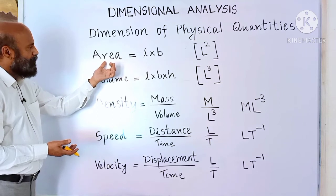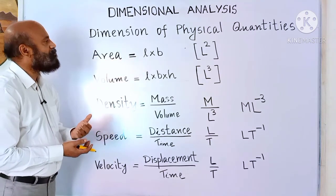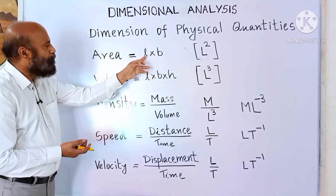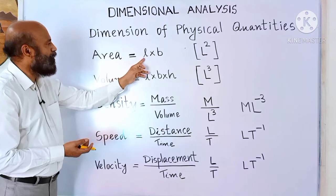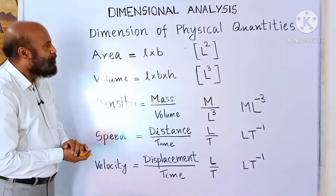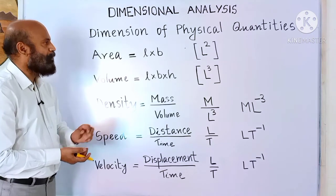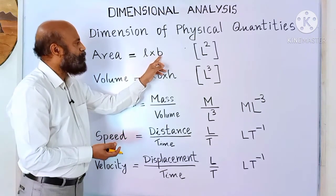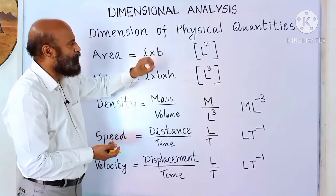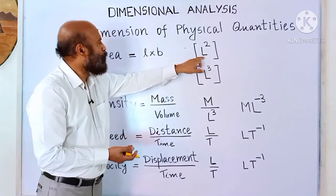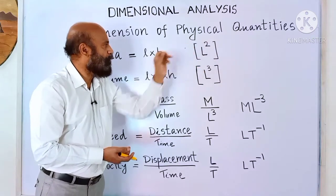Area is a derived quantity. Area of a rectangle, for example, depends on length and breadth. Area is length into breadth. Length dimension is capital L, and breadth is also measured in meter, so its dimension is also L. So dimension of area is L squared within the square bracket.